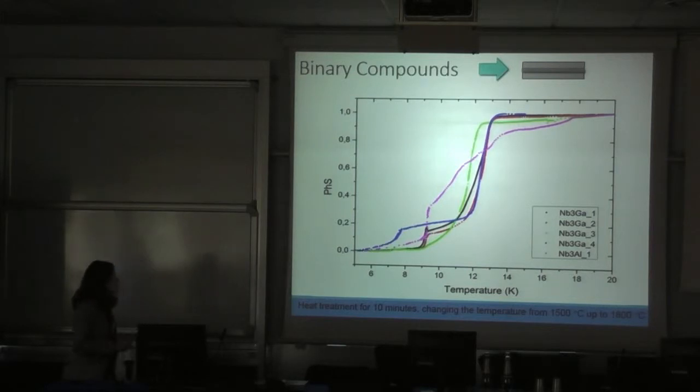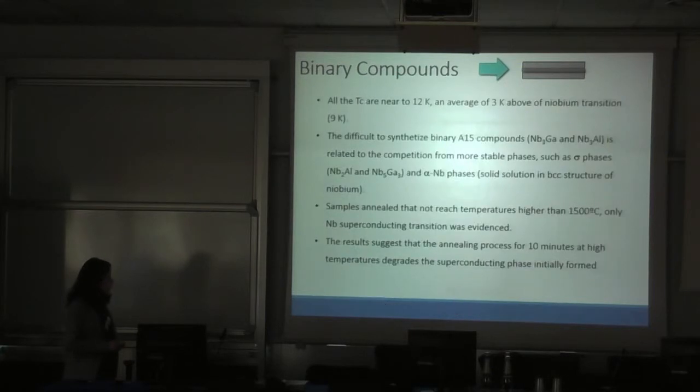We start with binary compounds. As we said before, we use the configuration number 1. We can note that all the superconducting transitions that we found are near to 12 Kelvin. For niobium-3-gallium seems sharp, while for niobium-3-aluminum seems quite broad. However, we can see that the difficulty to synthesize binary compounds is related to the competition for the more stable phases, such as sigma phase and alpha phases. Because in the phase diagram, the A15 is only stable in a narrow region.